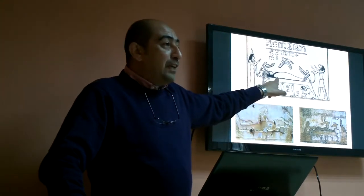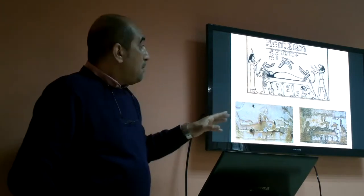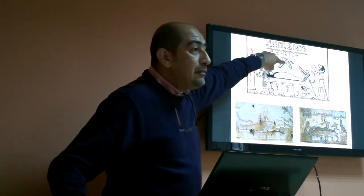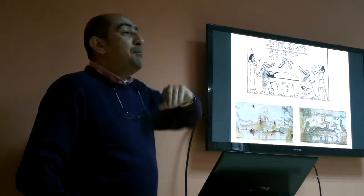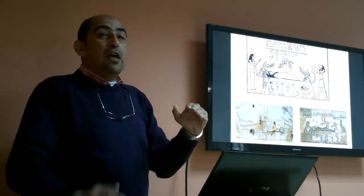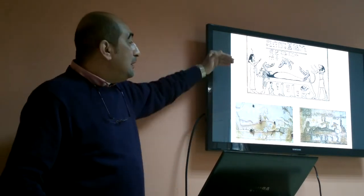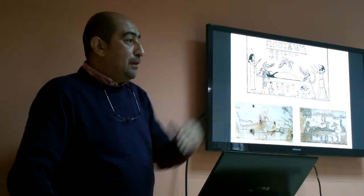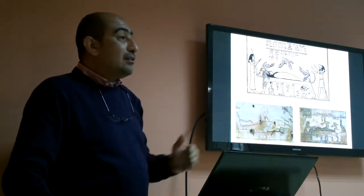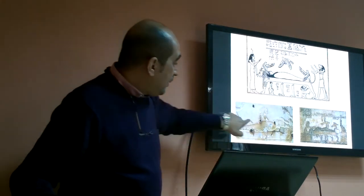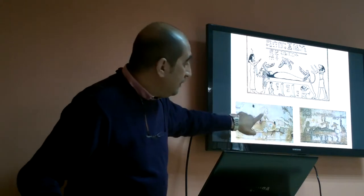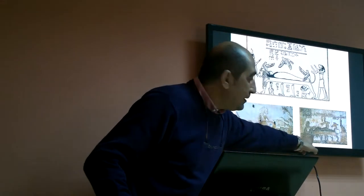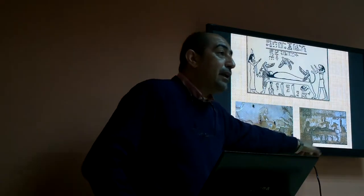The scene shows Osiris laying on the mummification table like a mummy, and in this scene we find Isis in the form of a bird flying over his body to receive his seed so she can give birth to their son Horus. This same scene also appears in the temple of Dendera, north of Luxor — another amazing Greco-Roman temple.